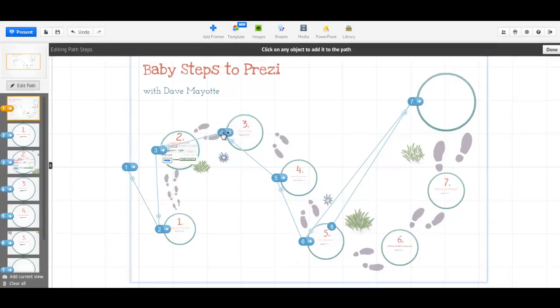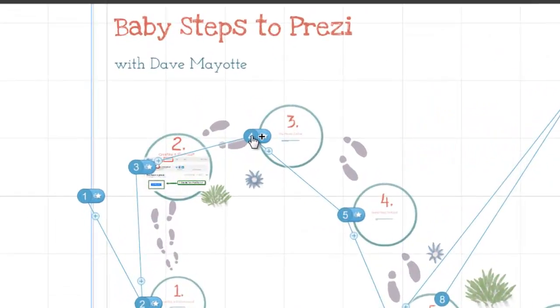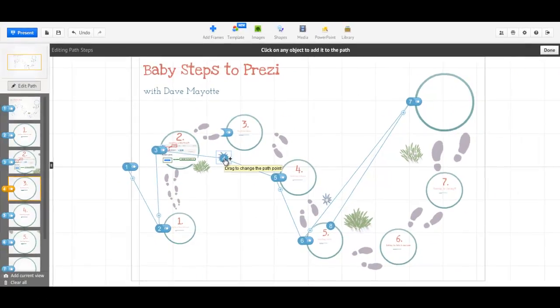If I want the fourth slide of the path, I can click the number 4 and drag it to a different object which then will become number 4.